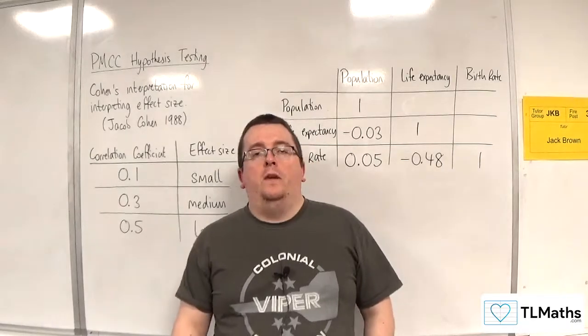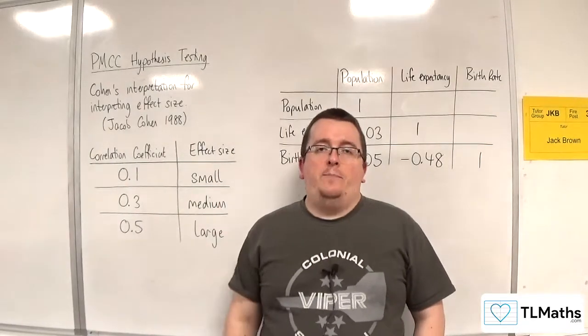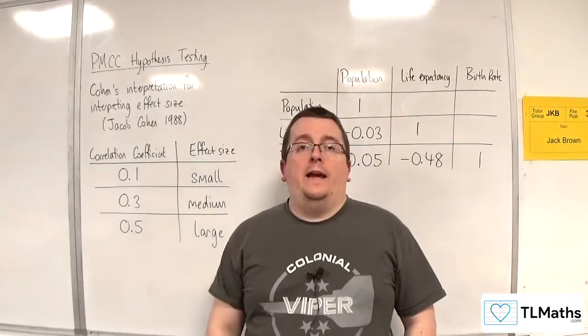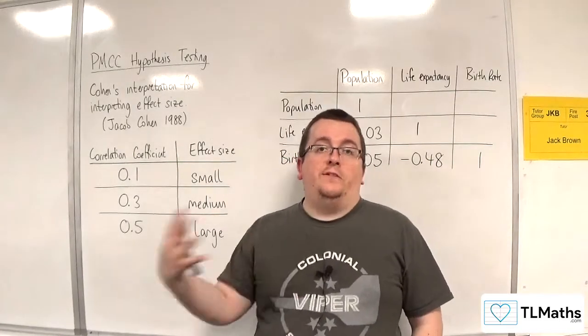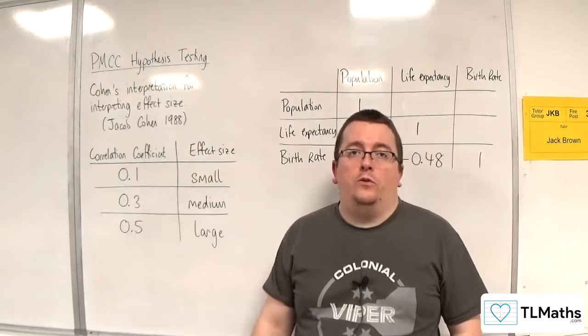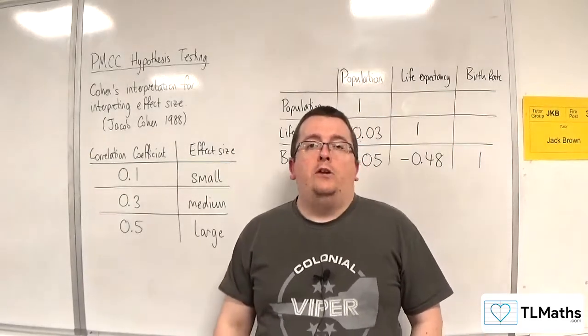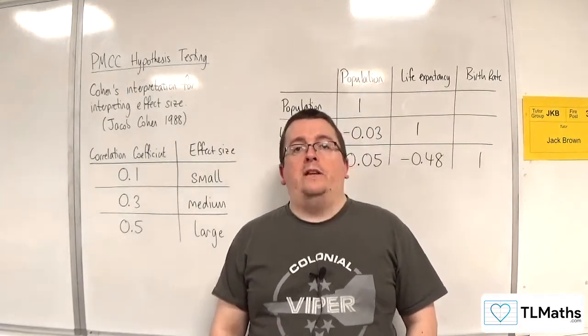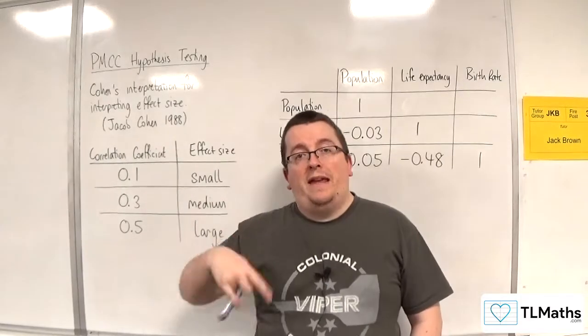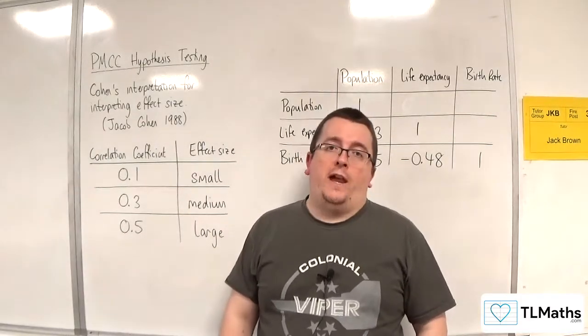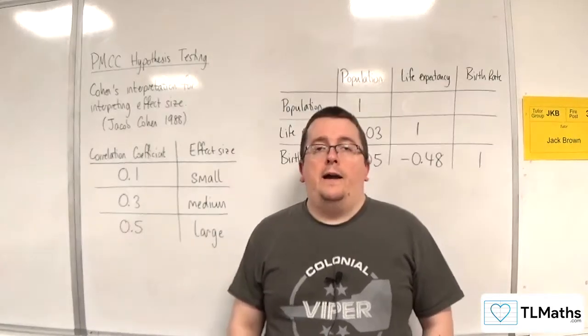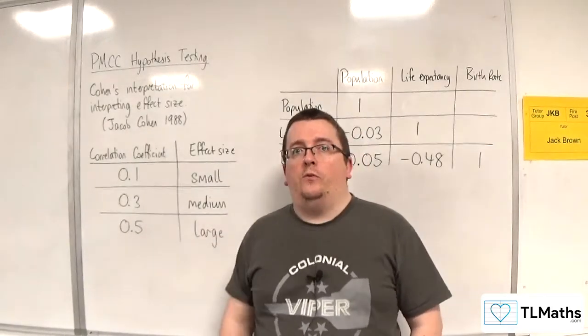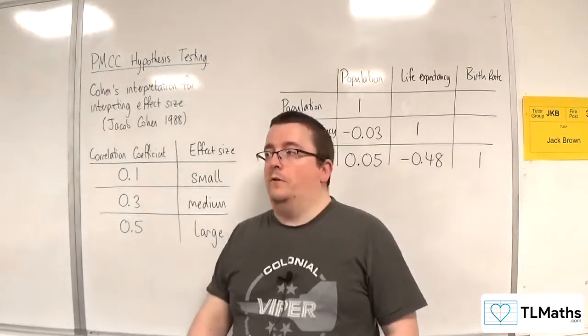As I explained in the previous video, when you are conducting a PMCC hypothesis test and n is very large, so by the time you get to 5,000 for example in your sample size, you don't need a very strong PMCC in order to reject the null hypothesis because the critical value decreases to that amount, so a very small amount.